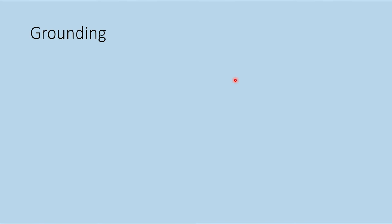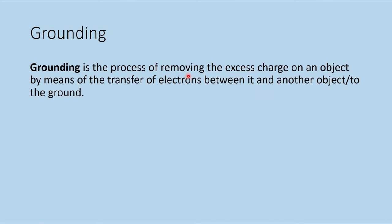Now we will talk about grounding. Grounding is the process of removing the excess charge on an object by means of the transfer of electrons between it and another object, or to the ground. For a negatively charged object, we reduce the number of electrons until the number of electrons and protons are equal, making it neutral.